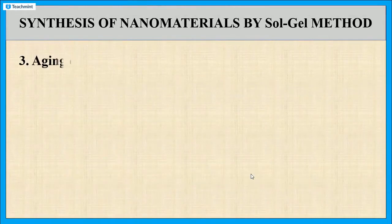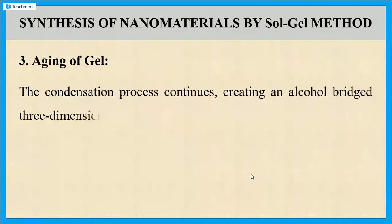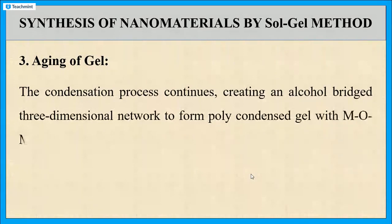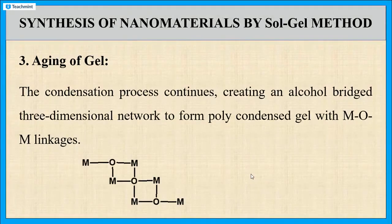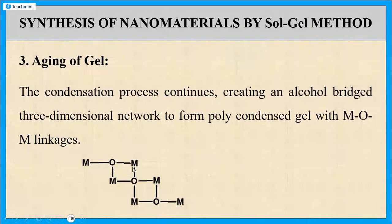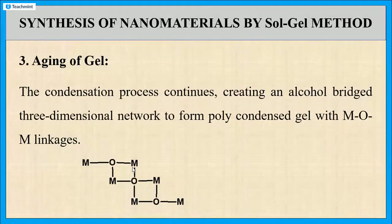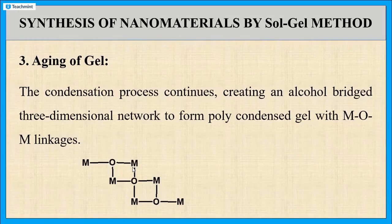The third step is the aging of gel. In this step, the condensation process of metal hydroxide continues, and more and more metal-oxygen-metal bonds link together. The formation of an alcohol-bridged three-dimensional network takes place. As the condensation process continues, the formation of a poly-condensed gel takes place. This gel is left to age to create strengthening of the network.